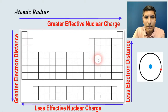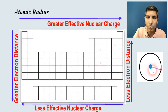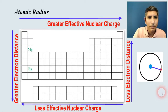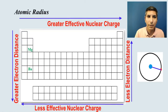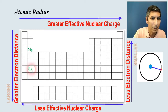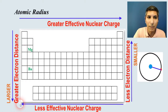Atomic radius is the average distance from the nucleus to the outermost part of the electron cloud. If we compare magnesium and barium, the one with the larger atomic radius is barium, because it has more occupied energy levels. So atoms toward the bottom of the table have the larger atomic radius, while those toward the top have the smaller radius.